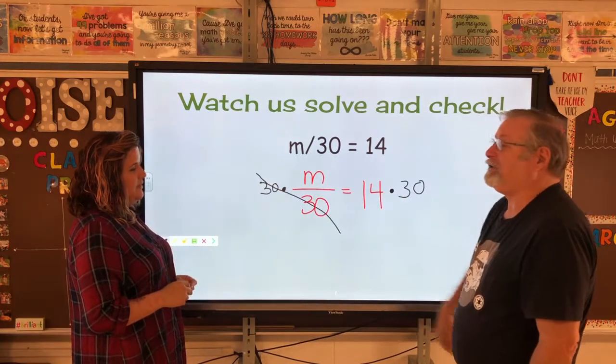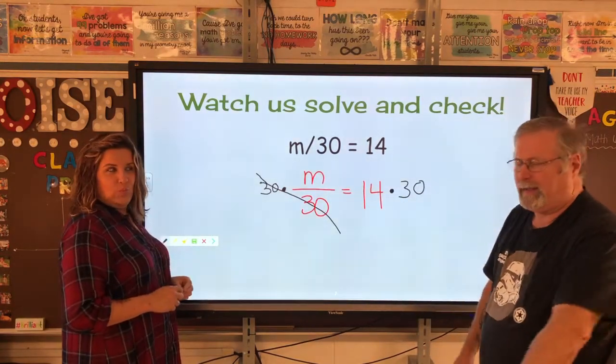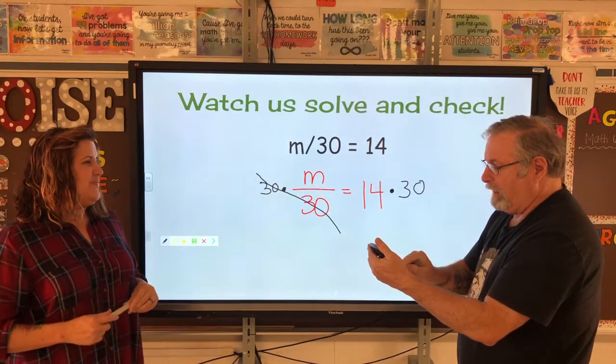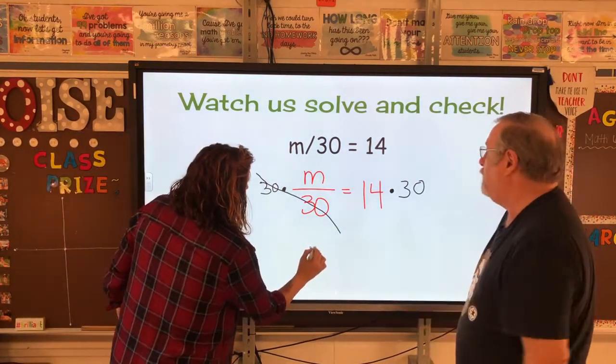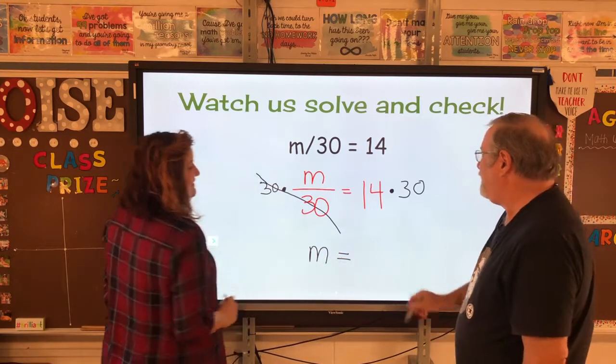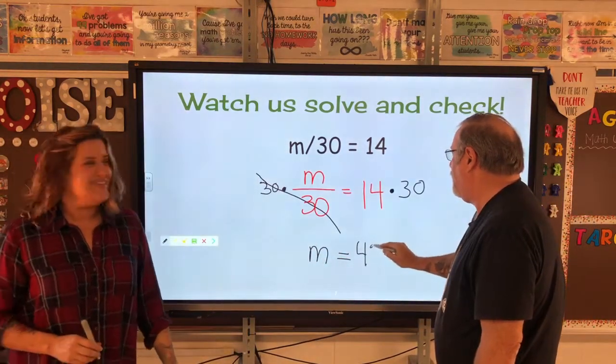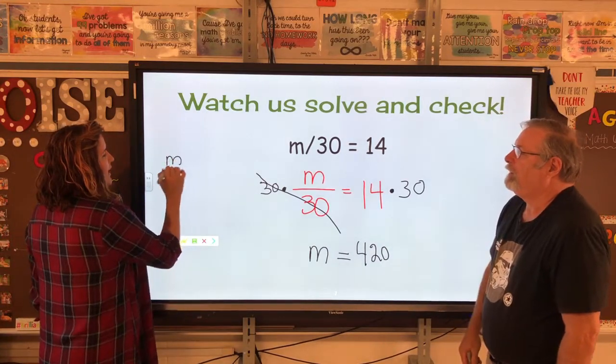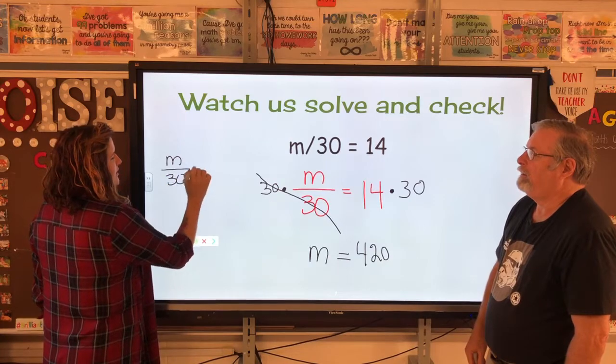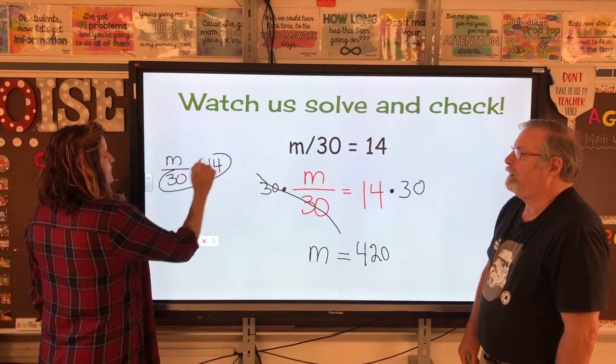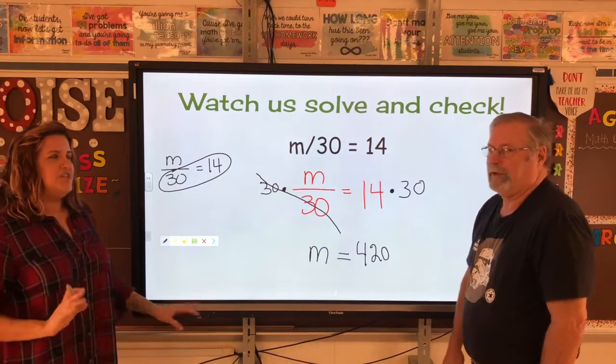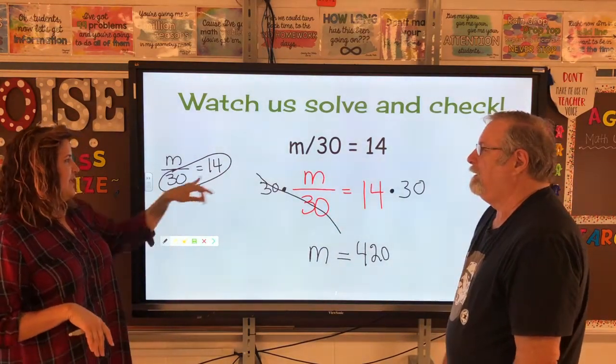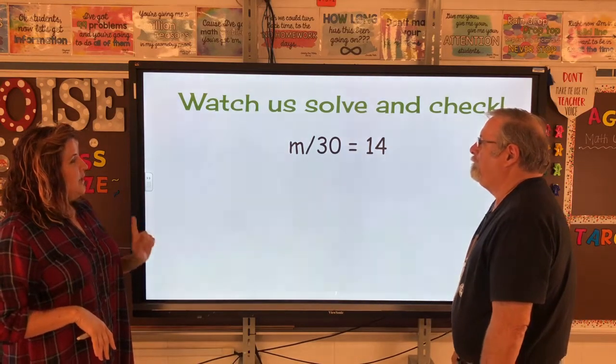And then 14 times 30, using my handy-dandy hand-held calculator, is 420. When I do the ones that have the division, I like to just kind of like multiply. It's just another way. So if you're like, I'm not going to write all of that on the outside, you just kind of loop right there and multiply.